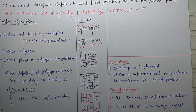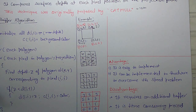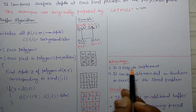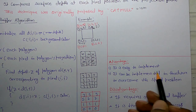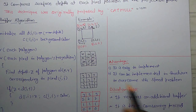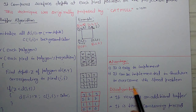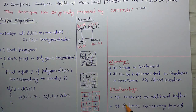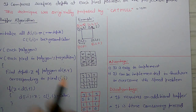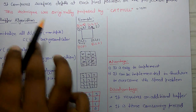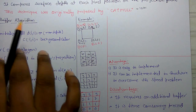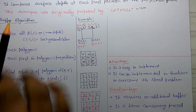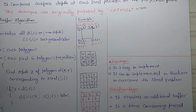The advantage of Z-buffer is that it is easy to implement and can be implemented in hardware to overcome speed problems. The disadvantage is that it requires an additional buffer, similar to your frame buffer, where memory is required. So it is a memory-consuming process.